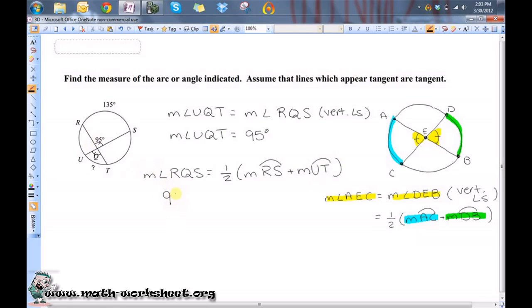This is 95 degrees is equal to one-half 135 degrees plus this unknown quantity, which is what we're trying to find.